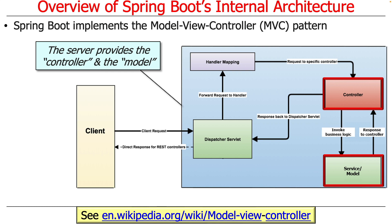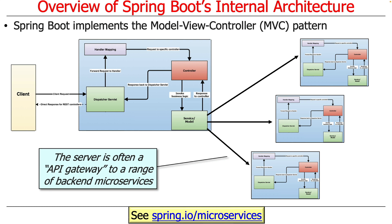In modern systems, the server in the middle is often referred to as an API gateway to a whole range of back-end microservices. The client only interacts with this API gateway. Your assignment 1A doesn't have an API gateway — it talks directly to the microservice — but very quickly we're going to add an API gateway. Then we'll start defining a bunch of microservices that run in the background, so the client only knows about the API gateway and not the individual microservices.